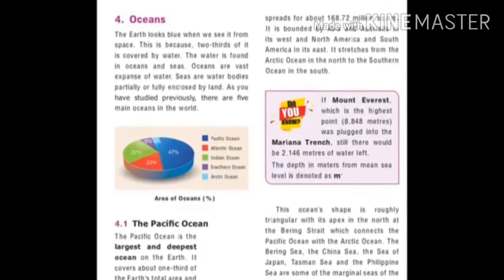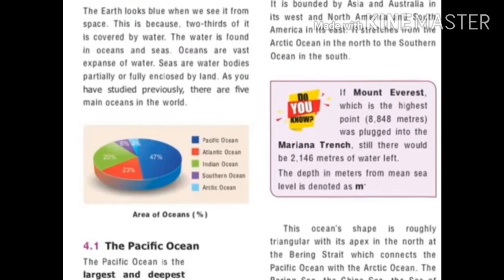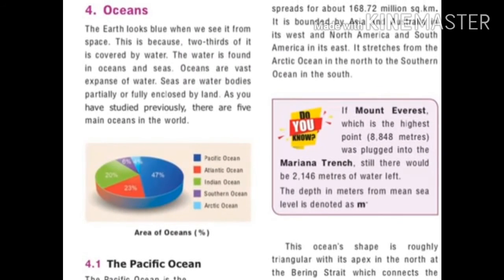The earth looks blue when we see it from space because two-thirds of its surface is covered by water. Water is found in oceans and seas. Oceans are vast expanses of water, while seas are water bodies partially or fully enclosed by land.